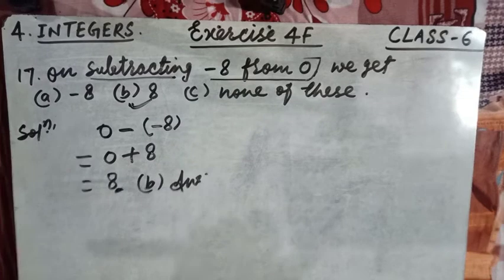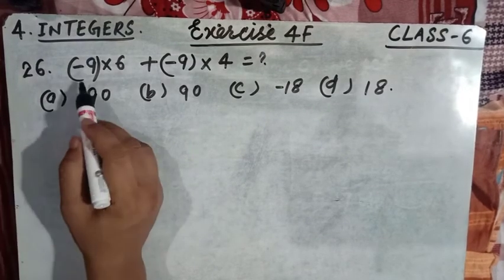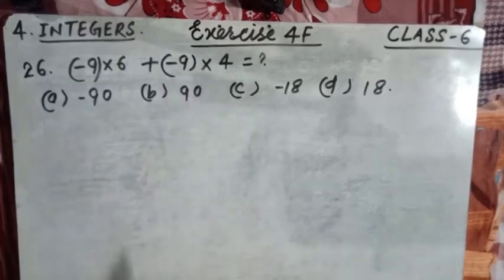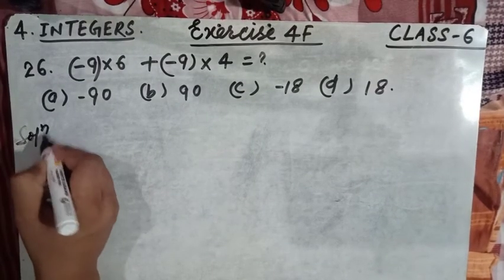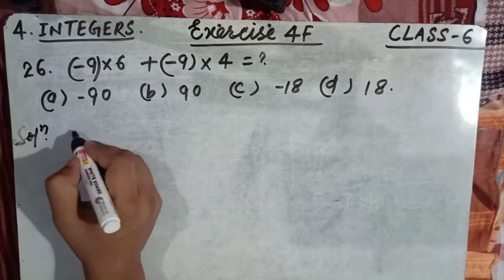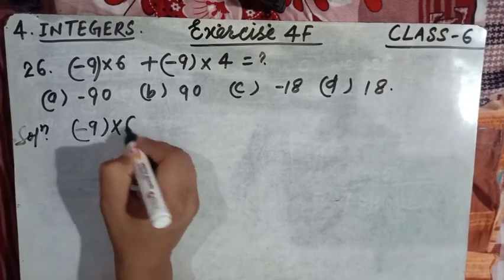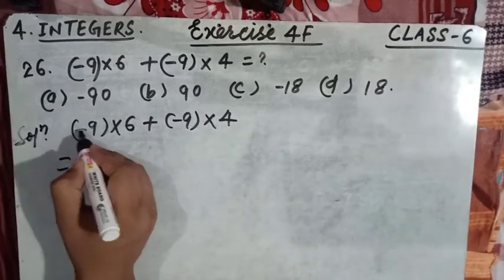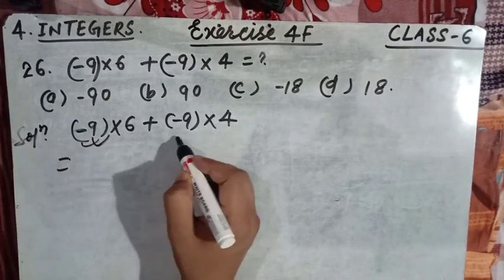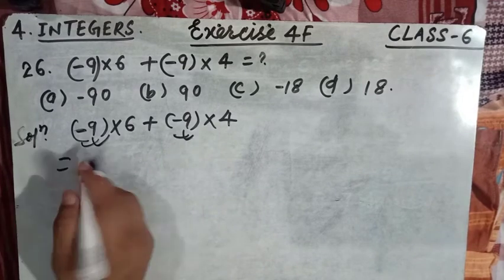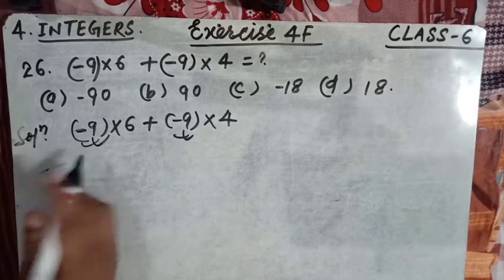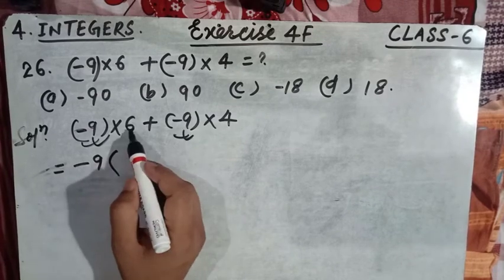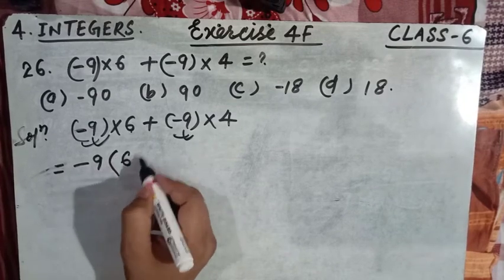Question number 26 says: minus nine multiplied by six, plus minus nine multiplied by four, equals what? It has four options. Write the question as it is. Here we have minus nine and minus nine — bring minus nine outside as a common factor. The remaining parts are six plus four inside the bracket.